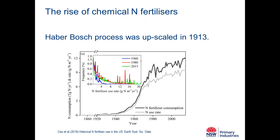One thing that really changed the way we do agriculture was around 1913, when the Haber-Bosch process was scaled up. That process now produces vast quantities of nitrogen fertiliser, essentially able to replace organic amendments. Up until the 1900s, organic amendments were the main source of nitrogen fertiliser for farming systems. We can see that rapid increase in nitrogen use — last year around 12 million tonnes of nitrogen fertiliser were applied globally.